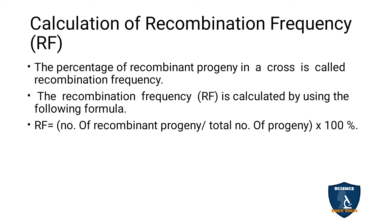How do we calculate the recombination frequency (RF)? The percentage of recombinant offspring in a cross is called recombination frequency. So, the percentage of recombinant offspring produced through recombination that occurs in a cross is the recombination frequency.